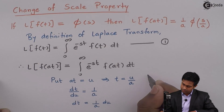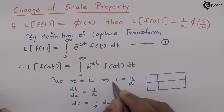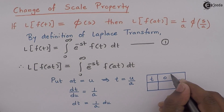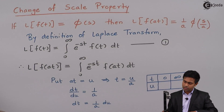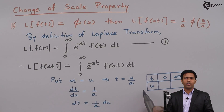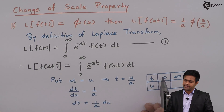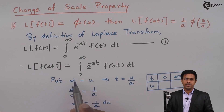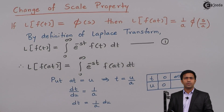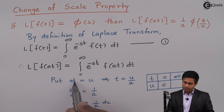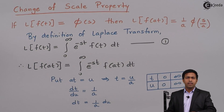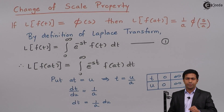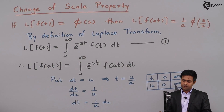Now let us find the new limits. The original integration is with respect to t, with limits from 0 to infinity. When t = 0, u = a·0 = 0. When t = infinity, u = a·∞ = infinity. So the limits remain unchanged — from 0 to infinity — when converting to u.